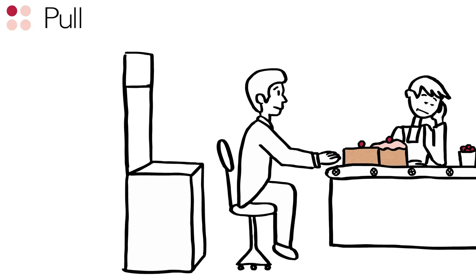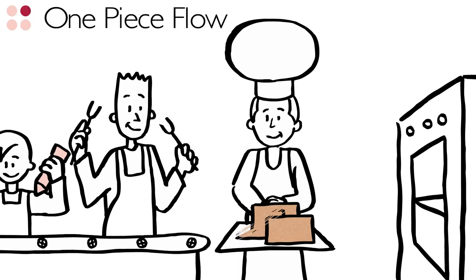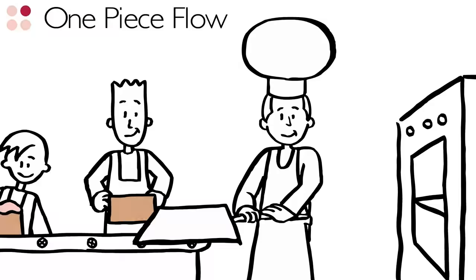The second is one-piece flow. Focusing on one single piece at a time minimizes work in progress, process interruptions, lead, and waiting time, while increasing quality and flexibility.